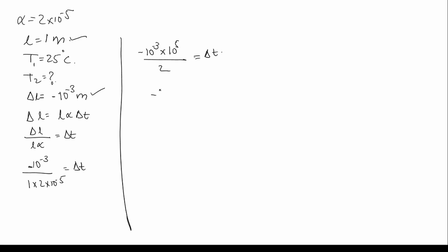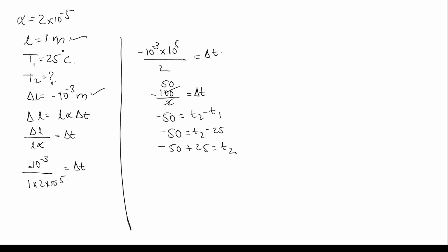This gives minus 10⁻³ × 10⁺⁵ equals minus 10⁺², and 100 divided by 2 equals delta T, so delta T equals minus 50. Since delta T equals T₂ minus T₁, we get T₂ minus 25 equals minus 50, therefore T₂ equals minus 25 degrees Celsius. So the answer is option A.